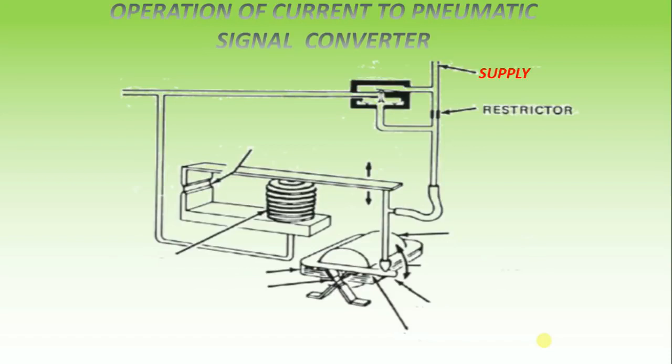Do you know how a current to pneumatic signal converter operates? A DC milliamps input signal is converted to a proportional pneumatic output signal by this following way.